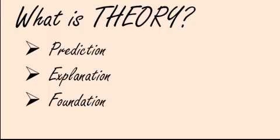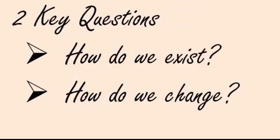Theories have to be broad enough to give us that foundation, but they also have to be narrow enough to help us predict and explain why a phenomenon is occurring. In sociology in general, we have three — or four — major theories that we use. Any good sociological theory that has withstood the test of time has to answer two key questions: how do we exist, how does society exist, what keeps us together? And how do we change — what elements contribute to how society changes?